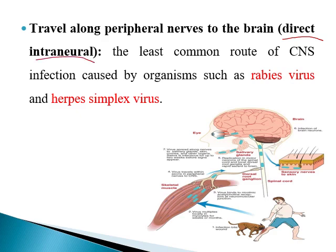Intraneural spread is considered the least common method, and it is actually used by viruses — for example, rabies virus and herpes simplex virus. As demonstrated in this photo, after a dog bite, the rabies virus can replicate for a while in the muscle, but after that it uses the axon of the peripheral nerve in order to reach the CNS.